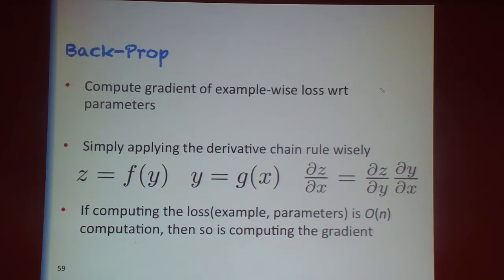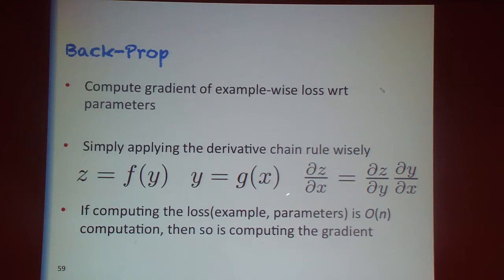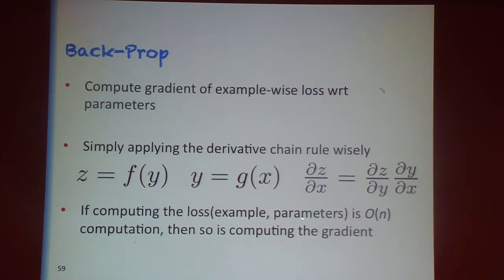The basic principle is the chain rule, which tells us what to do when composing functions — which is typically what we do in deep learning. If x is transformed by function g to get y, and y is transformed by function f to get z, the chain rule tells us how a change in x influences z as dz/dy times dy/dx. Furthermore, if computing the loss takes order-n computation, computing the gradient can also be done in order-n.